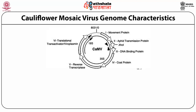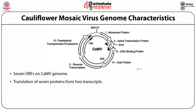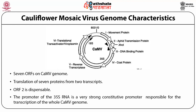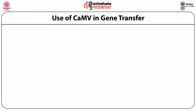One example of this caulimovirus is cauliflower mosaic virus. Its characteristics include: it contains circular DNA; seven ORFs on cauliflower mosaic virus can be translated into seven different proteins; translation of seven proteins occurs from two different main transcripts; ORF2 is dispensable, meaning you can clone your gene of interest there; and the promoter of the 35S RNA is a very strong constitutive promoter responsible for the transcription of the whole CaMV genome.